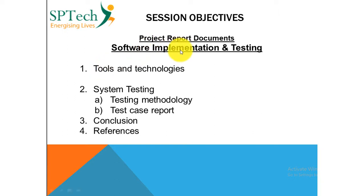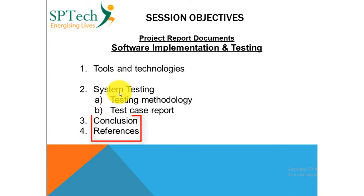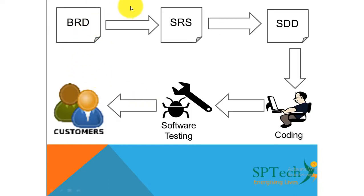Today we shall see the last and conclusive part of your project report documents in terms of software implementation and testing. This will cover two chapters: tools and technologies, and system testing. Under system testing you will have the testing methodology and test case report. The last sections will be conclusion and references.